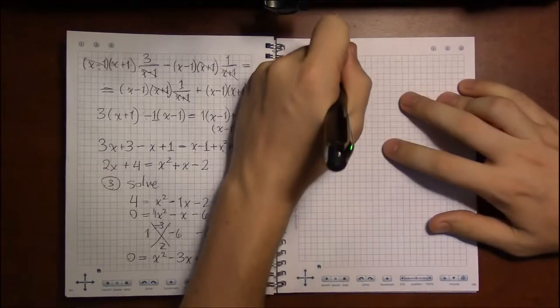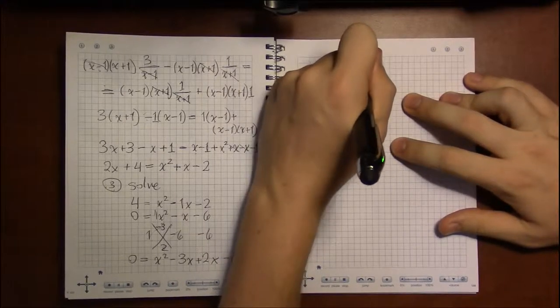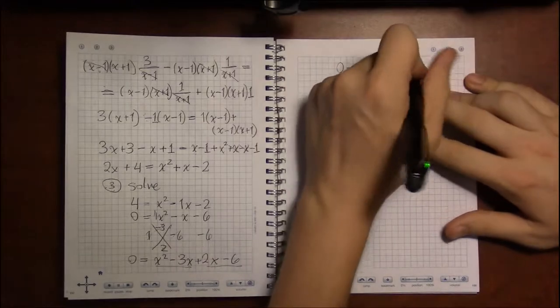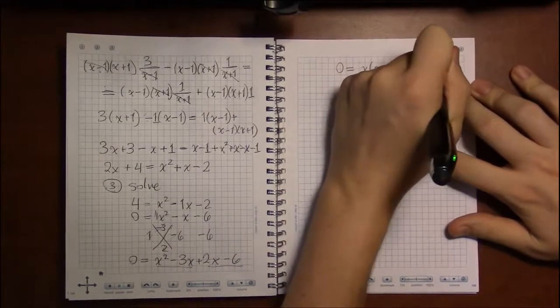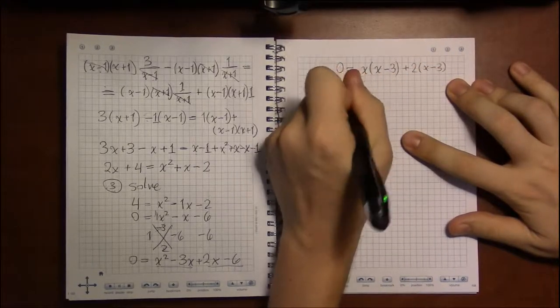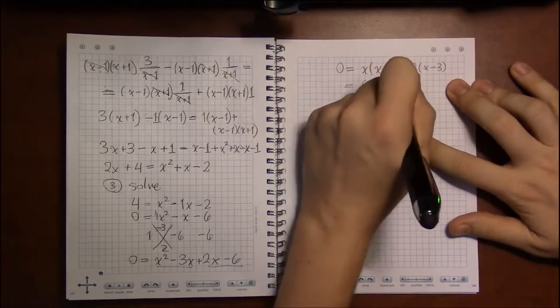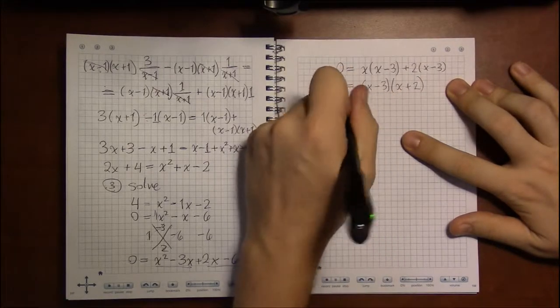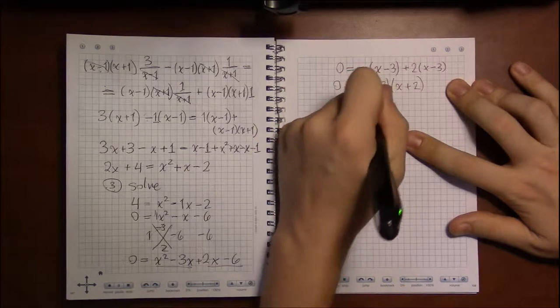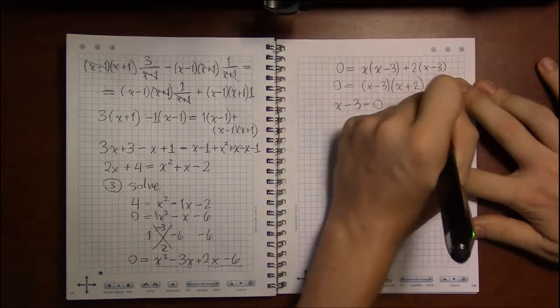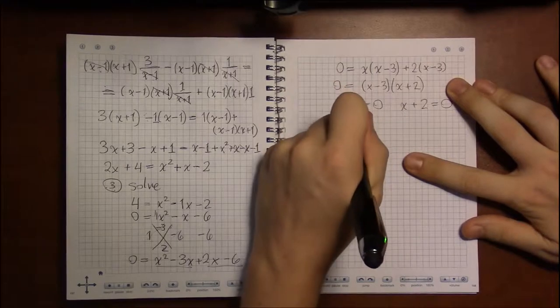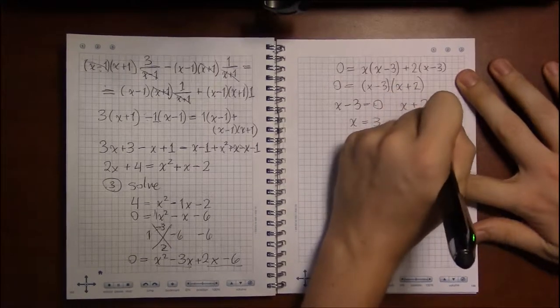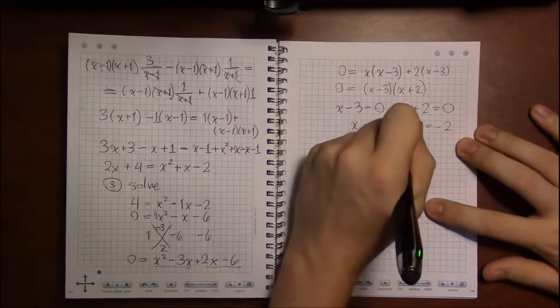Now factoring by grouping. I can factor an x out of the first two, and then out of these two I can pull out a 2. And that thankfully leaves me with two things in parentheses that are exactly the same, so I can factor those out. And they leave me with x plus 2. And now I have the nice product resulting in 0, which means the only way two numbers can multiply together and result in 0 is if one of those two numbers is 0. So either x minus 3 is 0, which would mean x equals 3, or x plus 2 is 0, which means x is minus 2. So these are our two solutions.